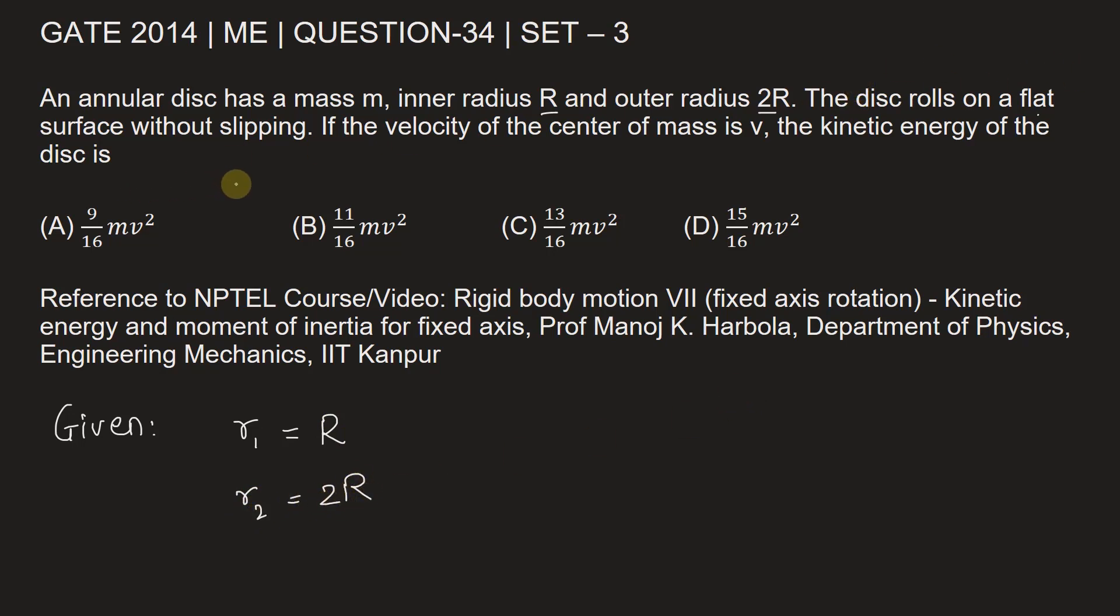The disc is rolling on a flat surface without slipping. Velocity of center is v and we need to find out the kinetic energy of the disc. Let's see how it is found out.